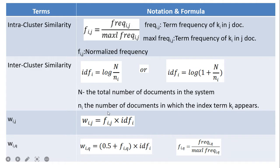These formulas are used in vector modeling. They look difficult but are easy to apply when solving a problem. First we calculate the intra-cluster similarity by calculating f_ij, which is a measure that normalizes the frequency value between 0 and 1 for a particular keyword.